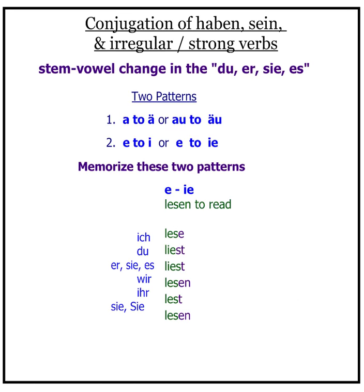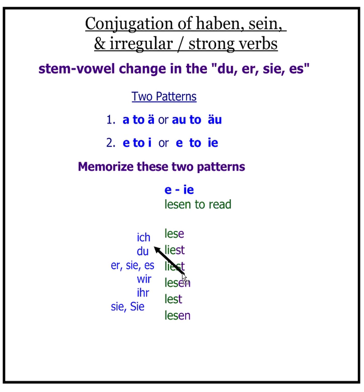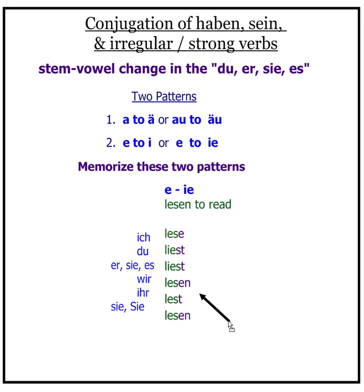Lesen, to read, has the 'e' to 'ie' pattern: ich lese, du liest, er/sie/es liest. Wir lesen, ihr lest, sie/Sie lesen.